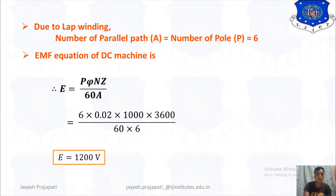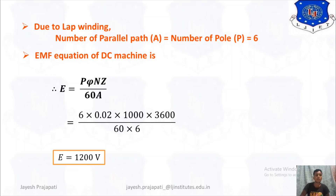So 1200 volts is the EMF induced in this DC motor or machine or generator. That is one example of using the EMF equation. In the next section, we will discuss more examples related to this topic. Thank you.